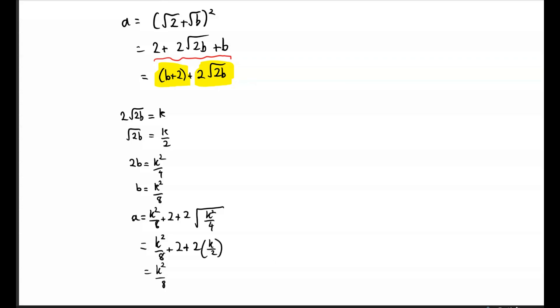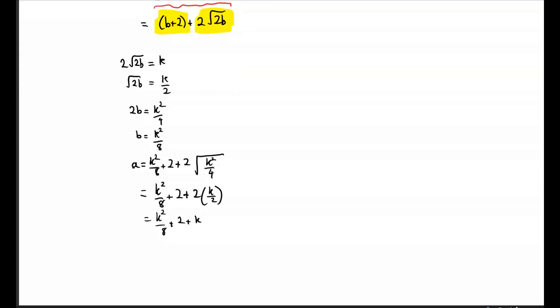This equals k²/8 + 2 + k. If we take these to a common denominator, we get (k² + 8k + 16)/8, which we recognize to be (k+4)²/8.